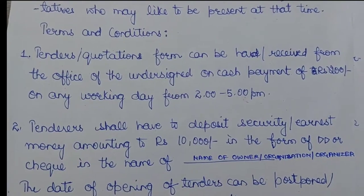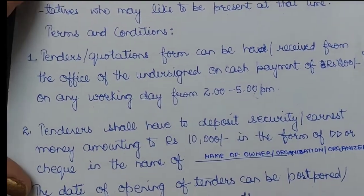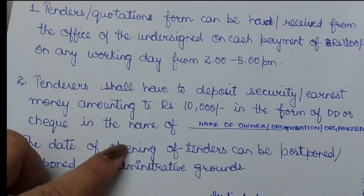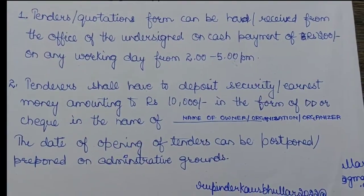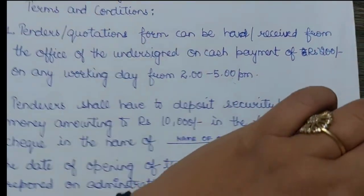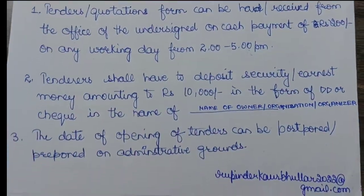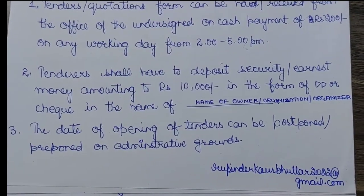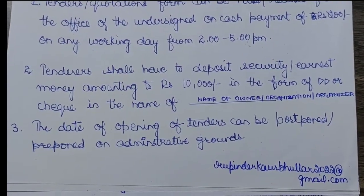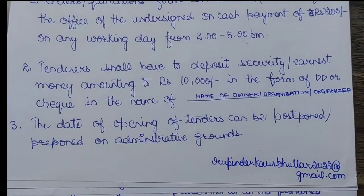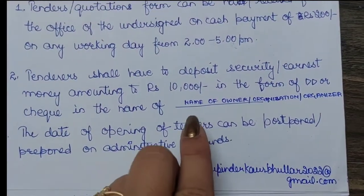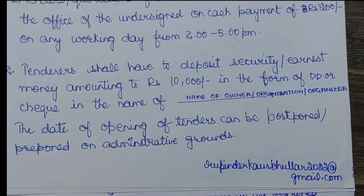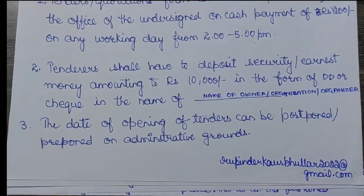From 2 to 5 PM on any working day, the quotation forms can be acquired. Then the tenderers shall have to deposit a security or earnest money amounting to rupees 10,000 in the form of a DD or cheque in the name of [owner/organization/authorized authority]. The date of opening of tenders can be postponed or pre-poned.